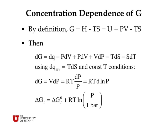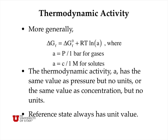By integrating this equation, we can see that delta G of formation for any substance equals delta G° of formation — a constant of integration — plus RT log of P divided by one bar. More generally, we write delta G as delta G° plus RT log of A, where A is the thermodynamic activity. For ideal gases, A equals P divided by one bar, and for solutes A equals C divided by one mole per liter. The thermodynamic activity has the same numerical value as the pressure or concentration but has no units, because the reference state always has unit value — one bar or one mole per liter.